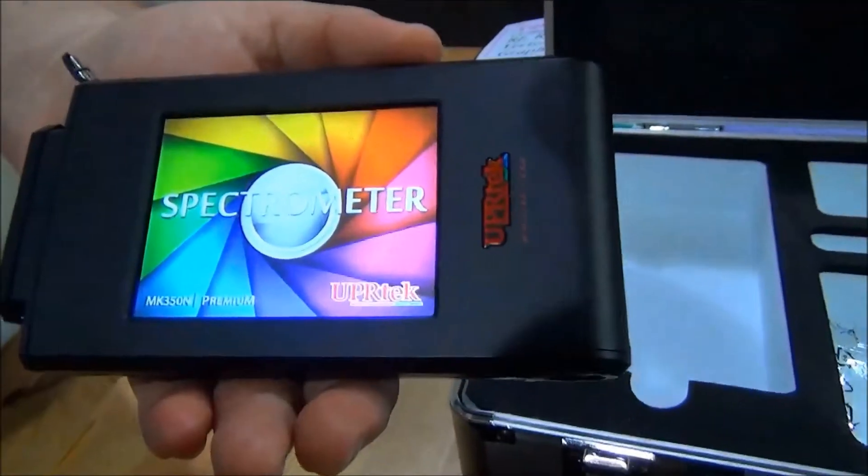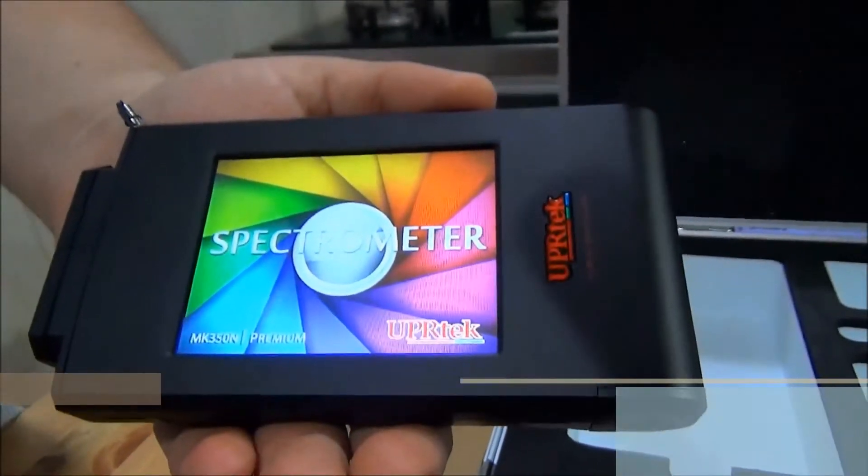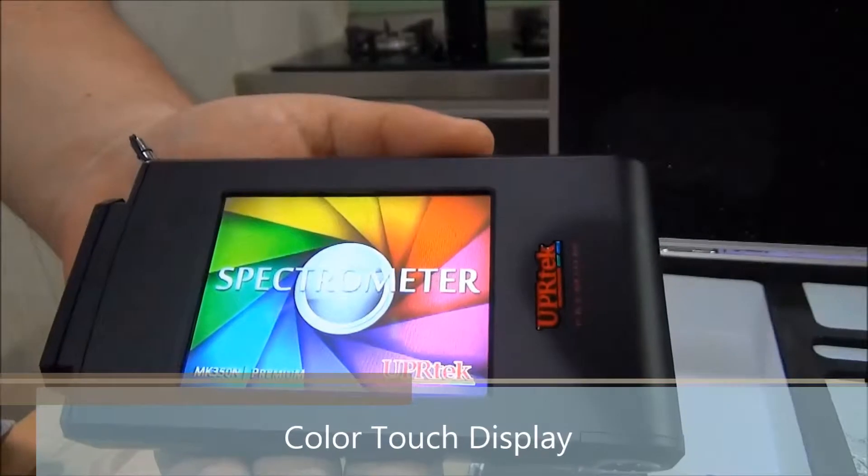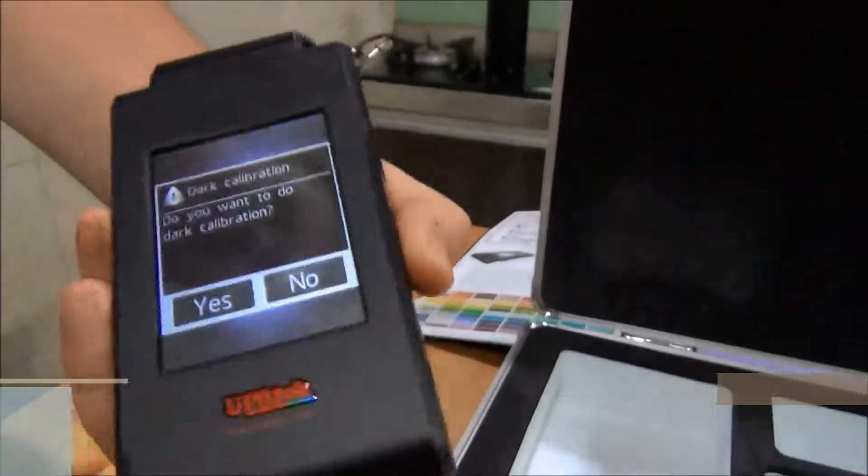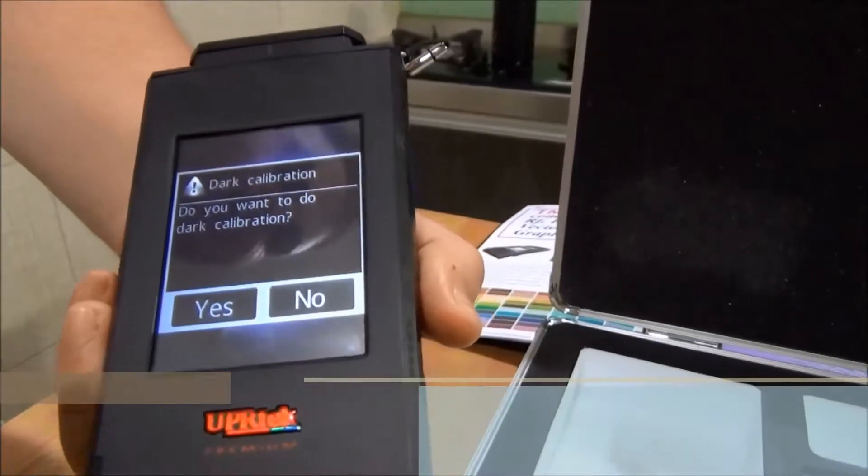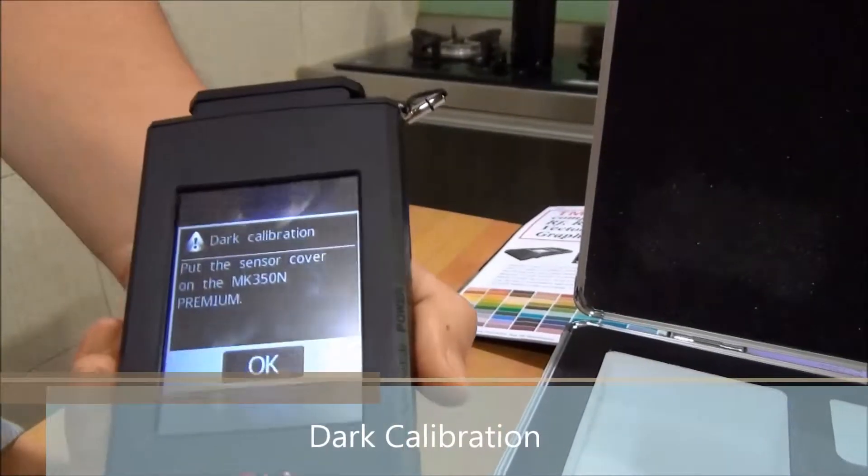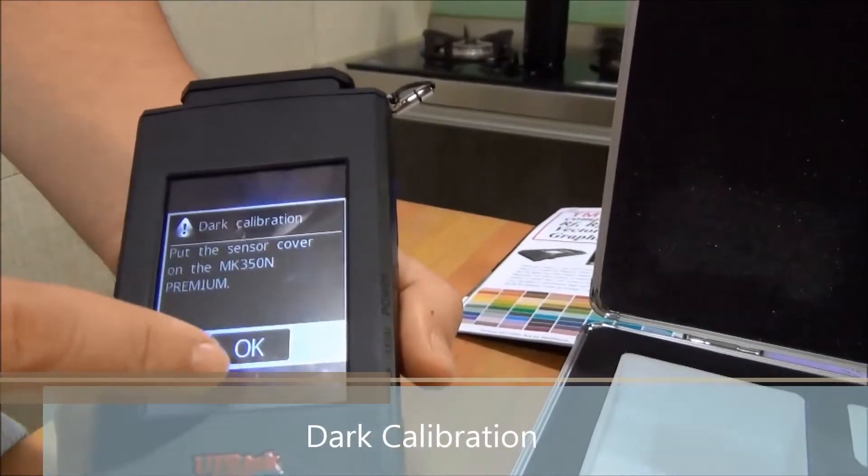So there you can see your full color touch screen display. It takes a few seconds for it to turn on. Then it's going to ask you if you want to start to calibrate. You click yes.